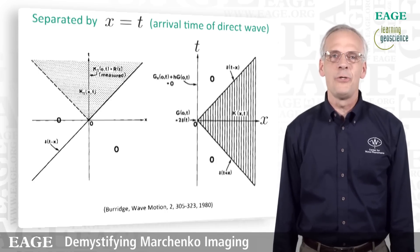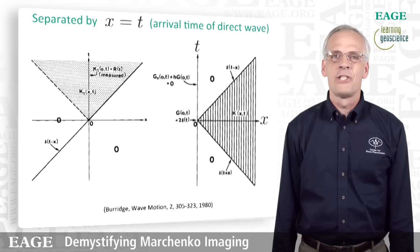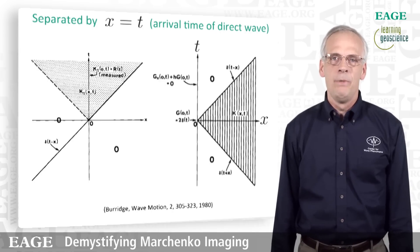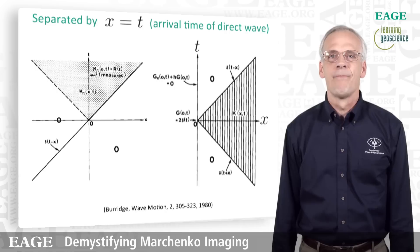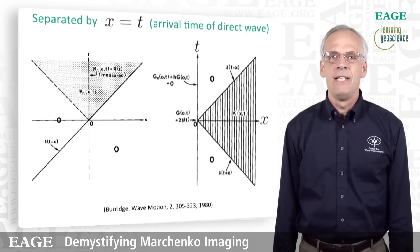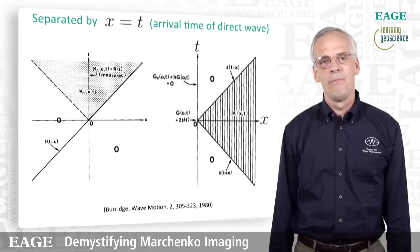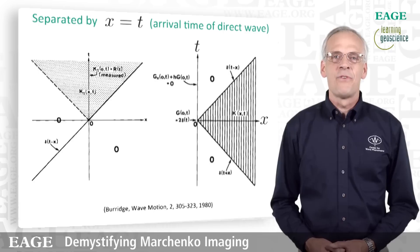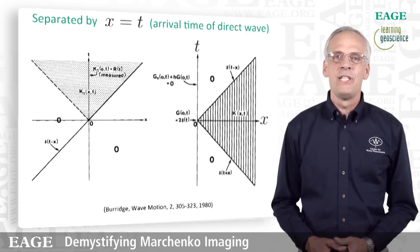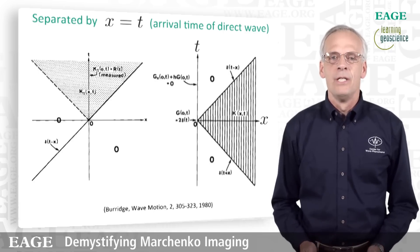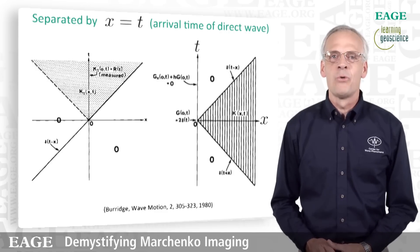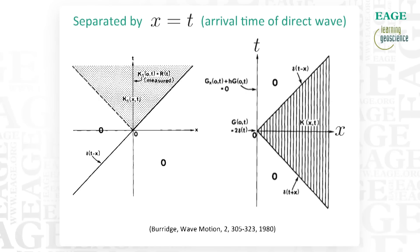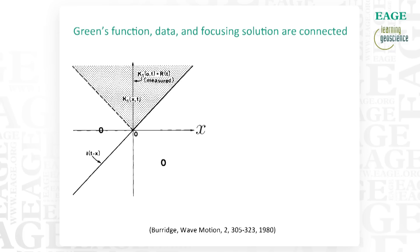The Green's function and the focusing solution are separated by the line x equals t, which is the direct wave propagating through the medium. This is the reason why in Marchenko imaging we still need to know the arrival time of the direct wave — it demarcates the difference between the areas where the Green's function is defined and where the focusing solution is defined. So Marchenko imaging is based on reflected waves recorded at the surface and an estimate of the direct wave, meaning we still need a macro model for the velocity.